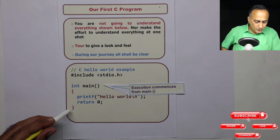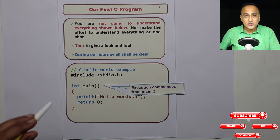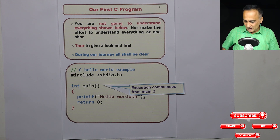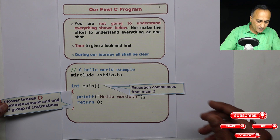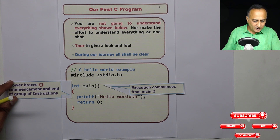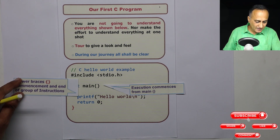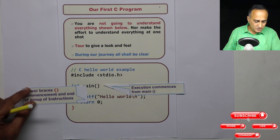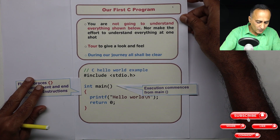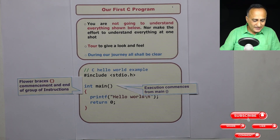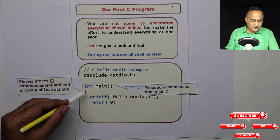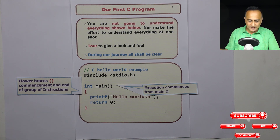Anything between the flower brackets is known as a block — we have used the concept of blocks in algorithms. This particular block is associated with the main function. The flower bracket indicates the commencement and end of a group of instructions. If you see this flower bracket here, this flower bracket indicates the commencement and end of a group of instructions. This is instruction number one, this is instruction number two. So this is a block of instructions all attached with main.